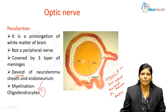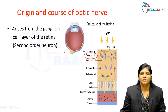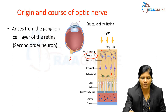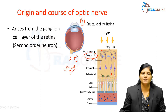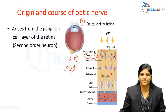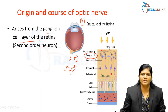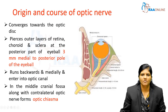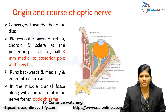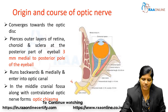The optic nerve is a prolongation of the white matter of the brain, not a peripheral nerve. It arises from the ganglion cell layer of the retina — these are the second-order neurons. The retina has 10 layers; from the ganglion cells, nerve fibers emerge and form the optic nerve. The nerve is located more toward the nasal aspect, not the temporal aspect. It runs backwards and downwards to form the optic chiasma along with the optic nerve of the opposite side.